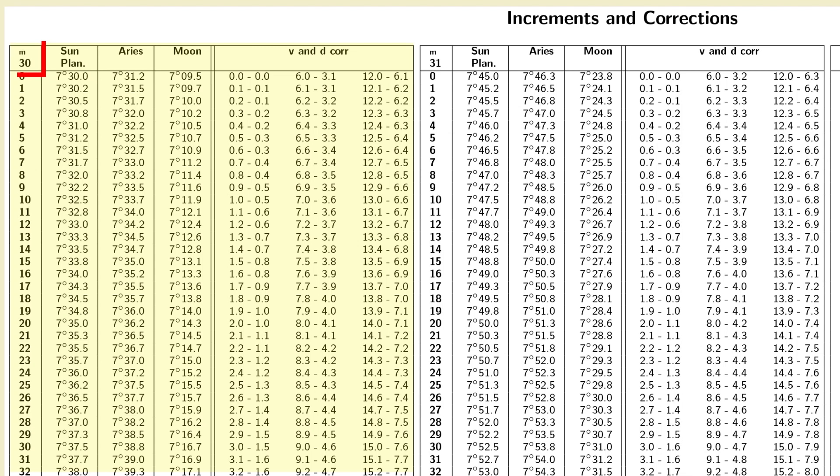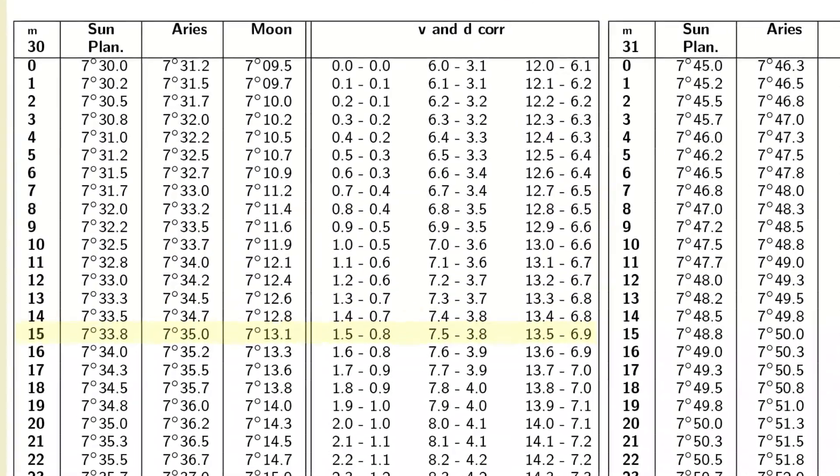I want the page for minute 30. Each minute has its own table of corrections. Minute 30 is here on the left, with each row of the table representing 1 second. As we need 30 minutes, 15 seconds, we look at row 15 in the 30 minute table. We find our correction is 7 degrees, 35.0 minutes.